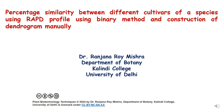Hello dear students. In this lecture we will discuss how to calculate percentage similarity between different cultivars of a species using RAPD profile and using the binary method for construction of a dendrogram manually.